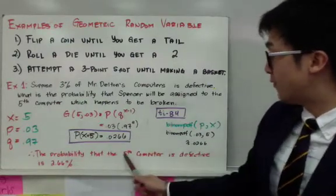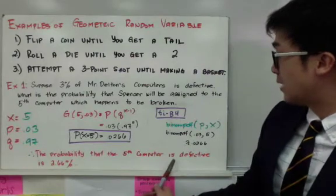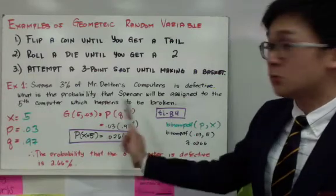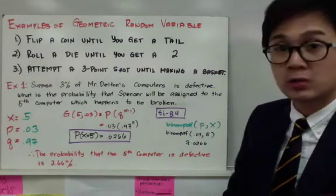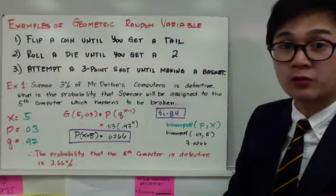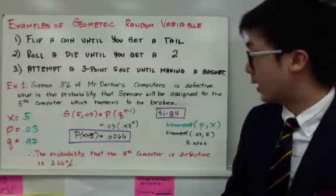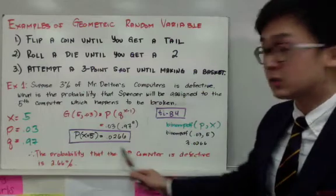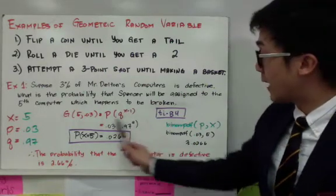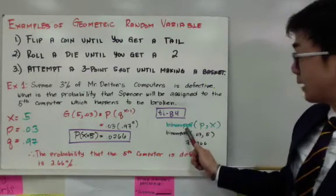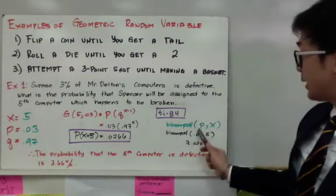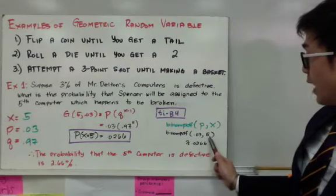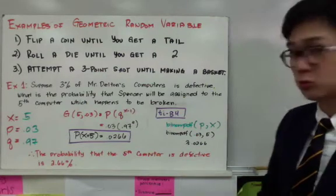Therefore, the probability that the 5th computer in Mr. Delton's class is defective will be 2.66%. That's how we use geometric probability for this question. You'll notice we don't have a set number of computers used in example number 1. Now, if you have a TI-84, the syntax for getting the geometric probability without using the formula manually will be geompdf, with p and x, or the probability of success and the number of successes, which is 0.03 and 5, and it will give you the same result, 0.0266.